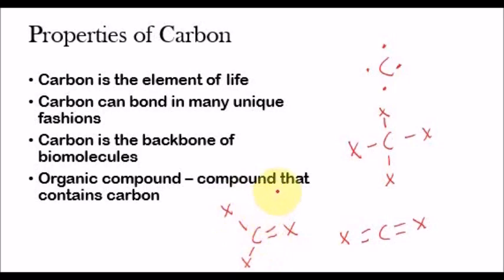No other element can do this very well. Carbon is very good at that. Since carbon can bond in many different ways to other elements, it's very good at being like the backbone. Carbon is the backbone of biomolecules. No other element has four valence electrons and can bond so well. That's why we see carbon in all living organisms. And typically, an organic compound is a compound that contains carbon.